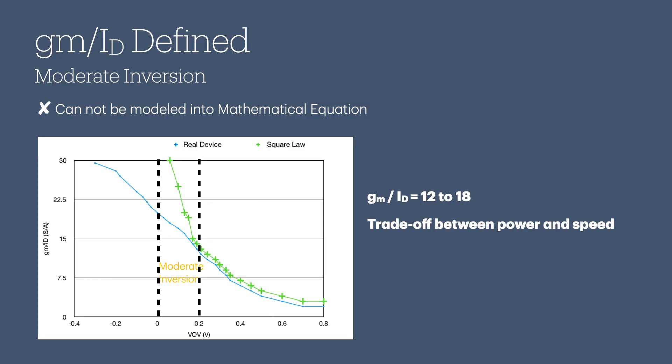Moderate inversion sits squarely between strong and weak inversion. In this range, GM per ID falls between 12 and 18, shown between those two dashed lines. Honestly, it's almost impossible to describe this region with math. Many researchers have tried to solve it. That's why we take a different approach. Rather than getting stuck in equations, we use a graphical lookup table to design the circuit. It simply works better for this challenging region.